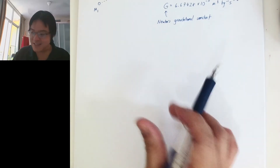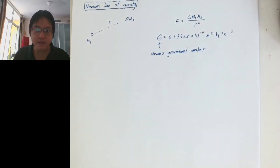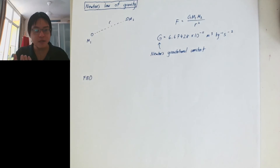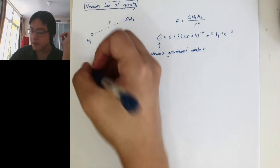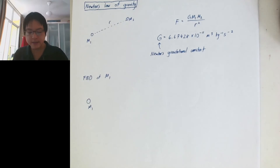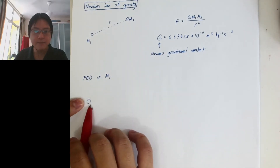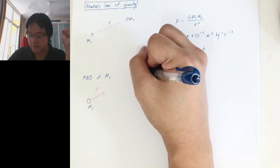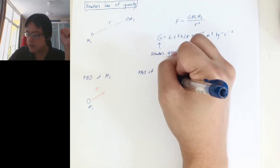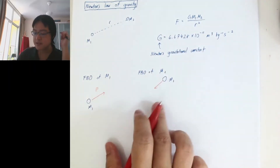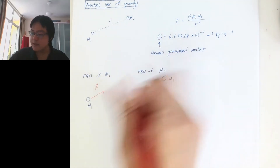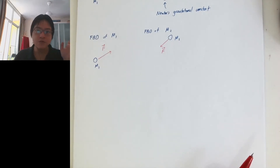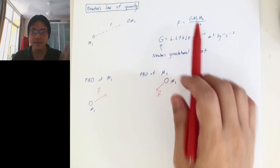We should focus on the gravity part. This is the magnitude of the force, and what we were talking about is we should take care of the vectors as well. That means we should use the same method — the free body diagram. Once we draw the free body diagram, we need to take into account the direction. The free body diagram of mass M1: what is the force experienced by M1? Let's say there's no other external force — no friction, no tension, only these two things. There is one force coming through here — this is the gravitational force. And then the free body diagram of M2 will experience the equal and opposite force in this direction. Force is a vector; this equation only tells you the magnitude, so you need to specify the direction as well.